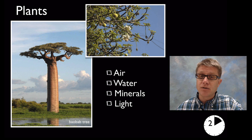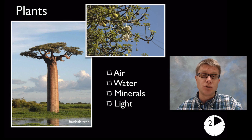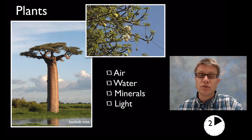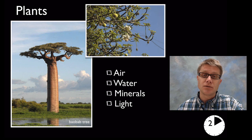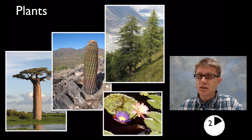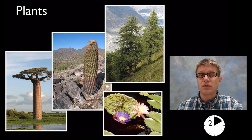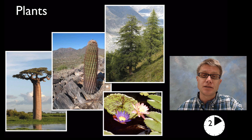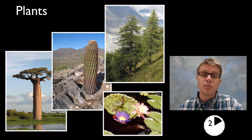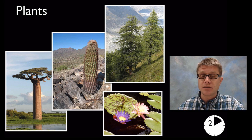Plants don't have it all their own way — they can't move. So they rely on animals to pollinate or to move their pollen around. Each of these plants has evolved to their specific environment, just like animals. A cactus is going to have different water requirements than a lily pad, but they all do well where they live.